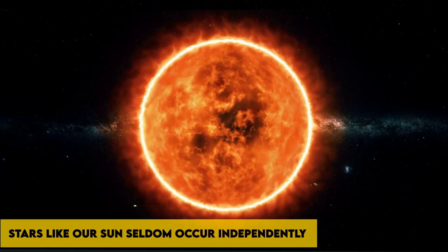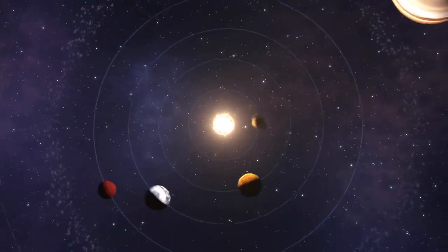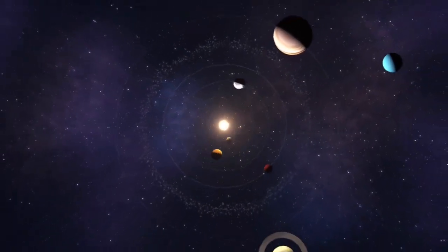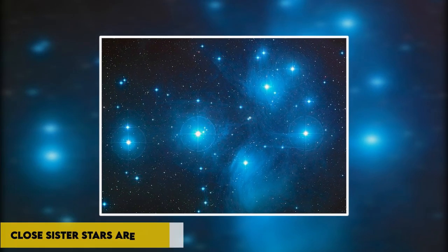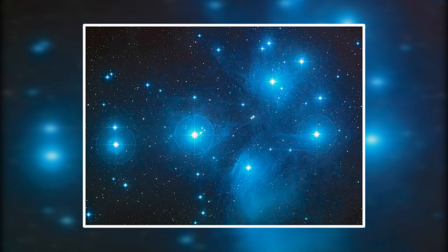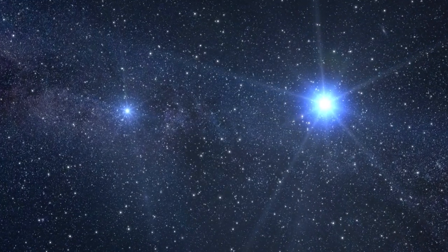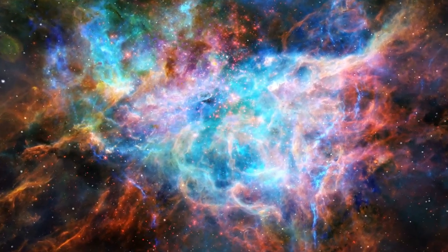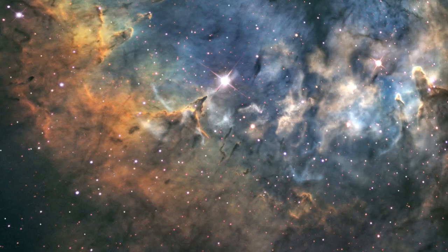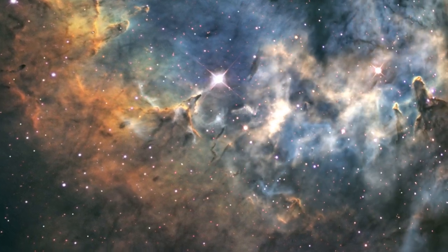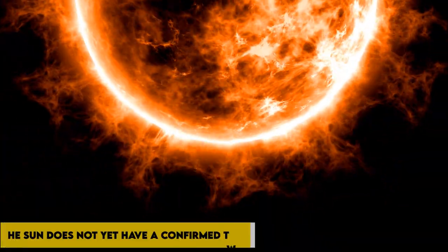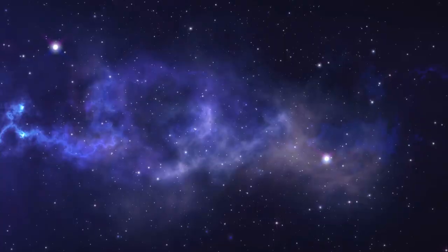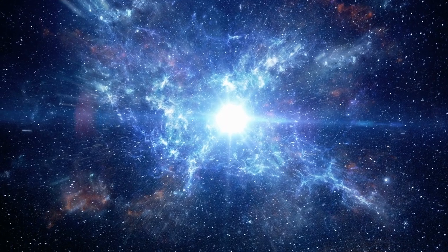Stars like our sun seldom occur independently, according to research that has been going on for a while. In most cases, close sister stars are dispersed, one or more of them. In order for the sun to form stars, massive molecular clouds must be packed with the gas and dust necessary for them to collapse under their own weight and start the internal ignition of nuclear fusion. The sun does not yet have a confirmed twin, which poses problems for our understanding of how stars form.